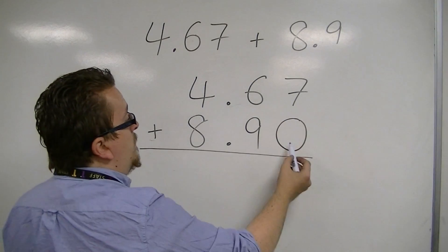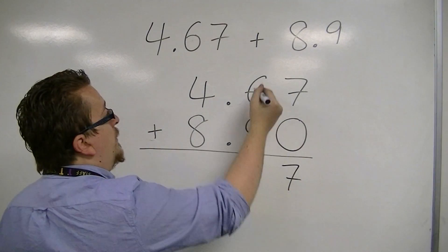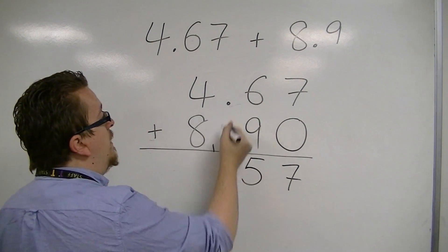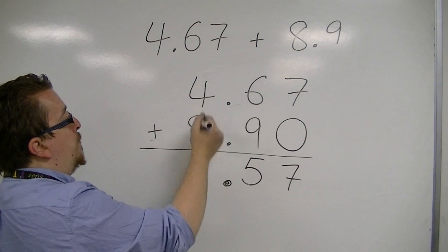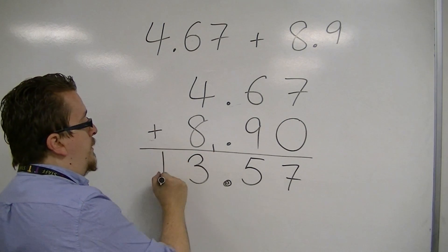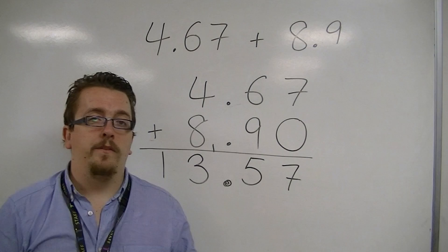Then we have 7 plus 0 is 7. 6 plus 9 is 15. Put the 5, carry the 1. The decimal point must follow down. 4 plus 8 is 12. Plus the 1 is 13. So we just get 13.57.